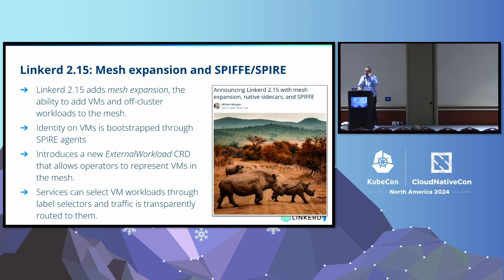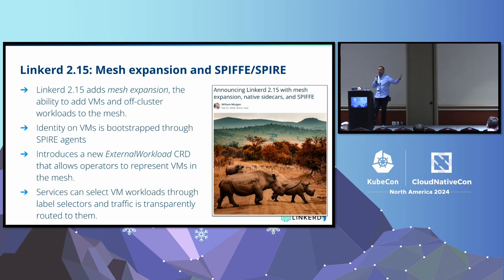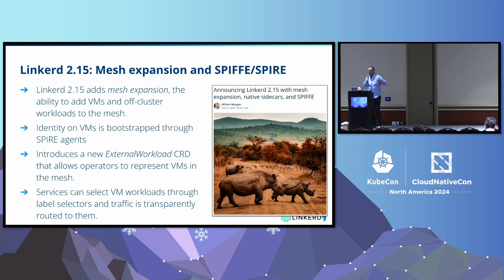Mesh expansion means you can run the Linkerd micro-proxy on VMs and on bare metal — anything outside of Kubernetes, as long as it's Linux. We don't have Windows support yet. So if you've got legacy Linux workloads and you don't want to jam them into Kubernetes, we can at least mesh them and give you mutual TLS, rate limiting, retries, and all the other features.